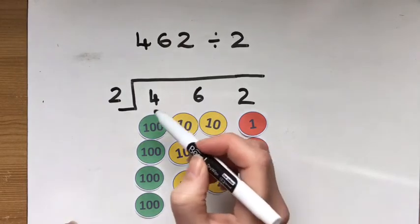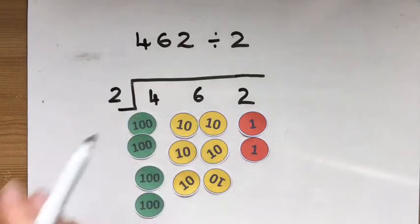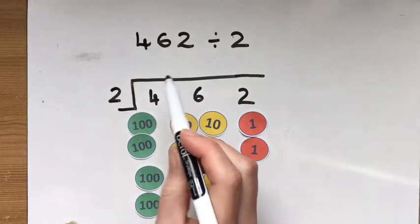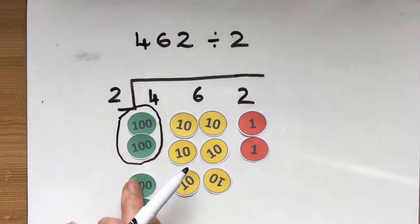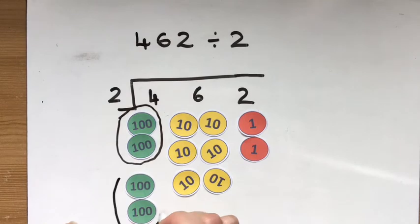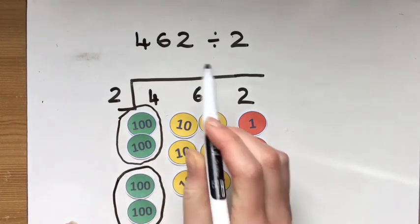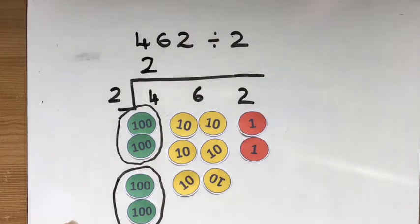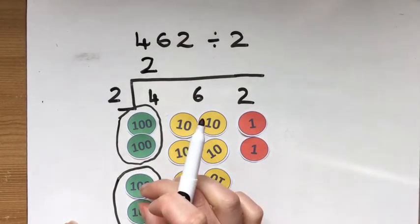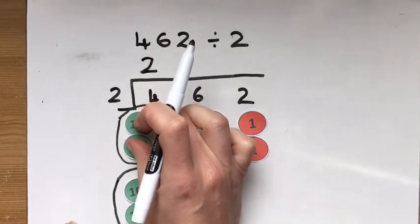So I can get one group of two there. Draw a circle around it just so that you can see. And another group of two here. So at the top here, I'm going to say two. 400 divided by two is 200. Two lots of 200.